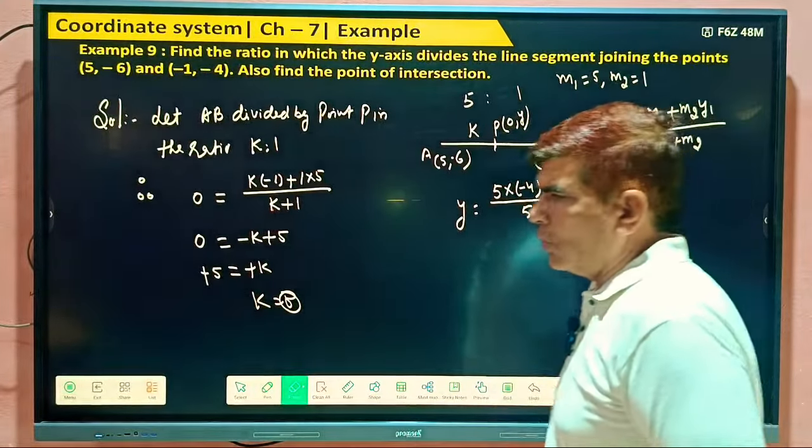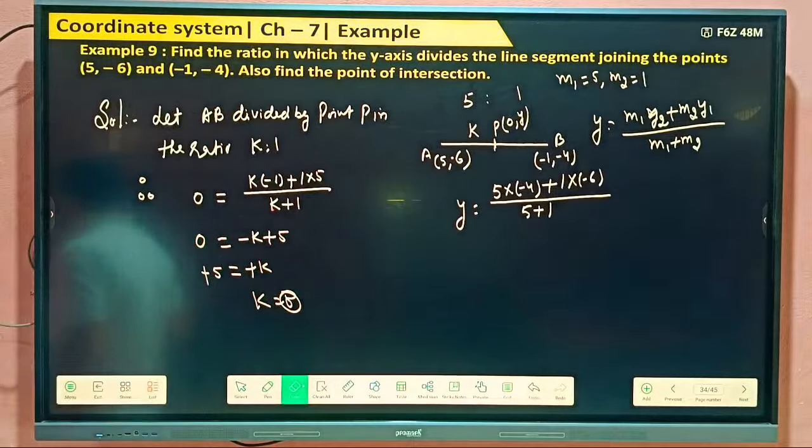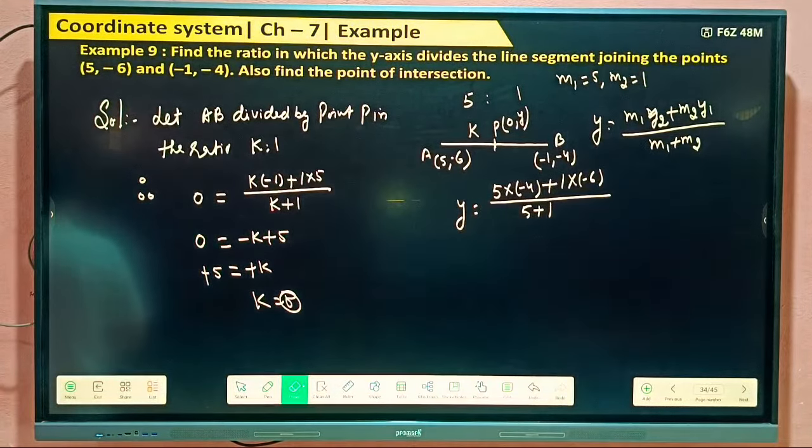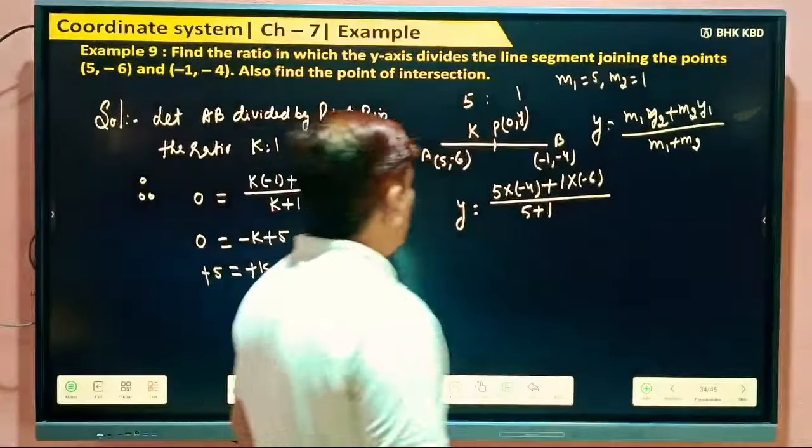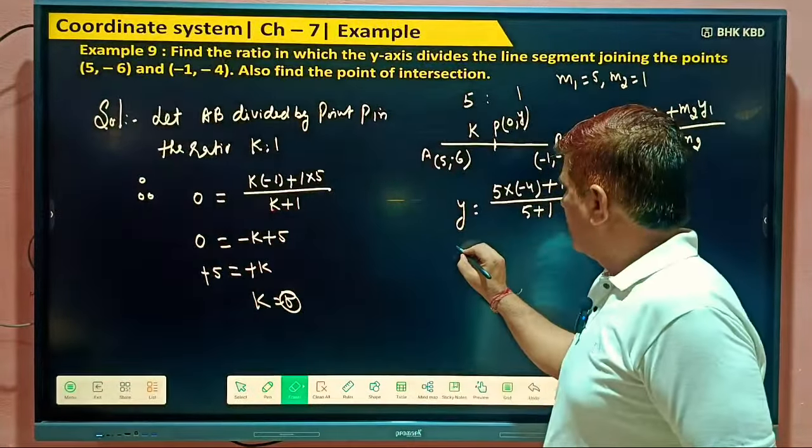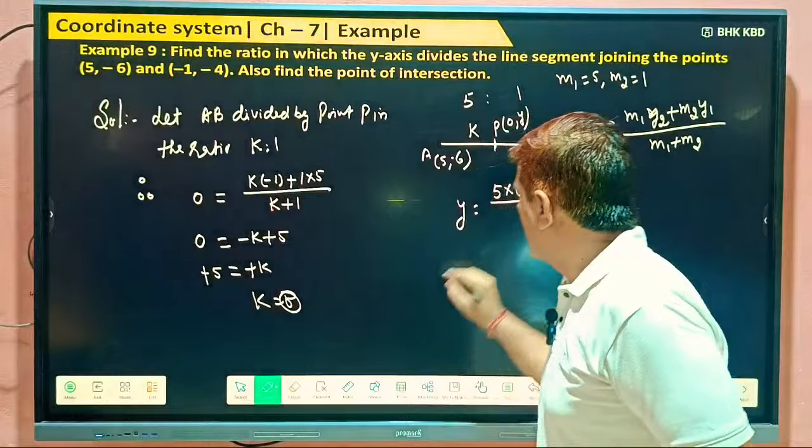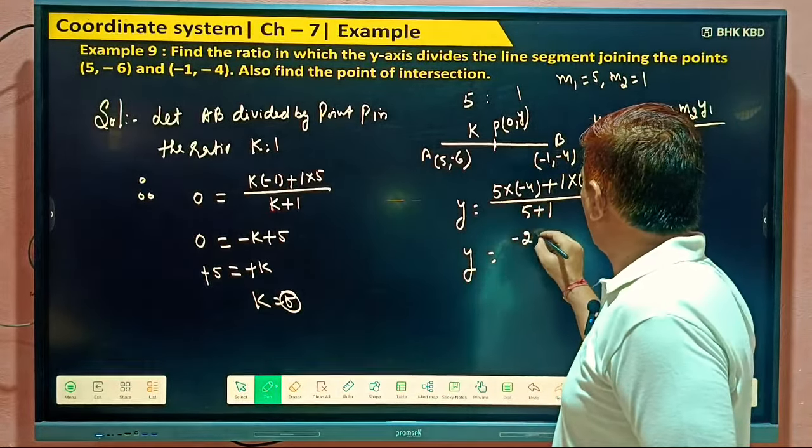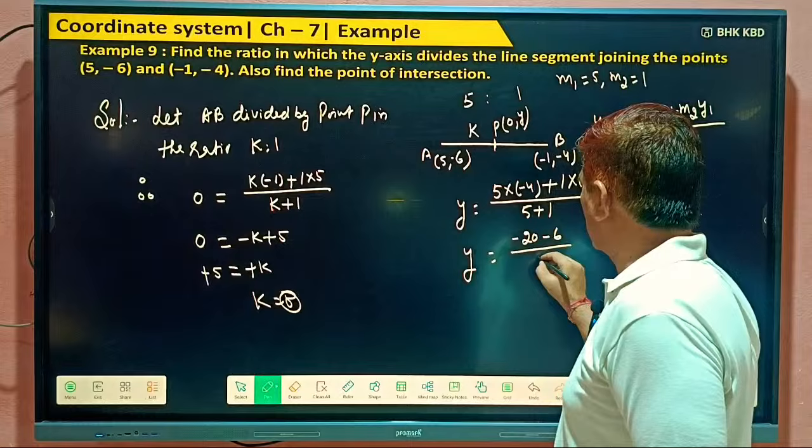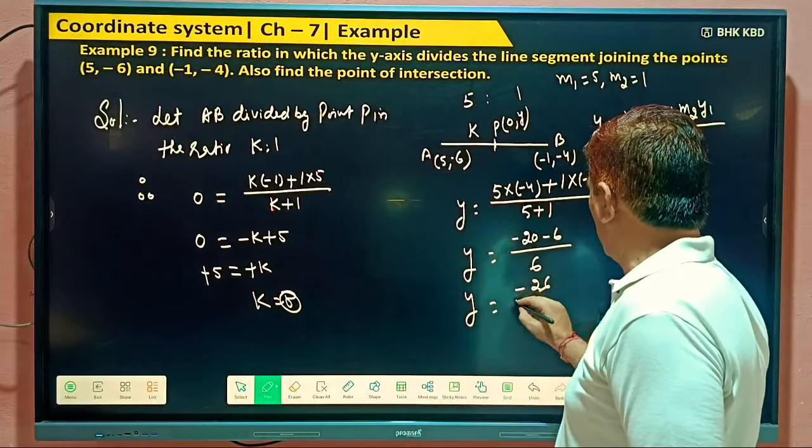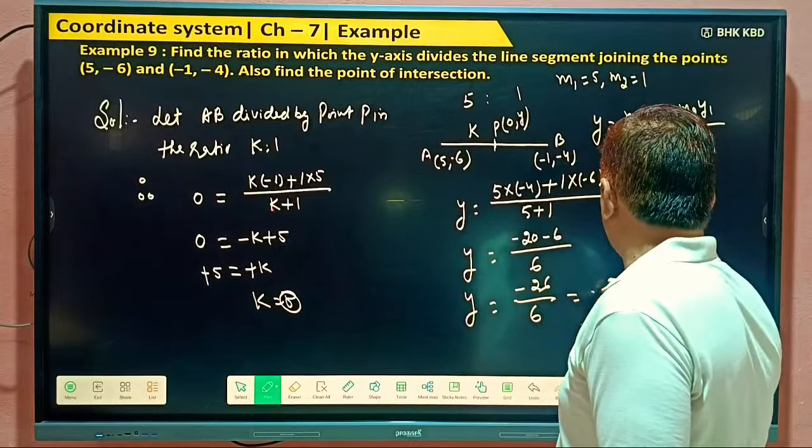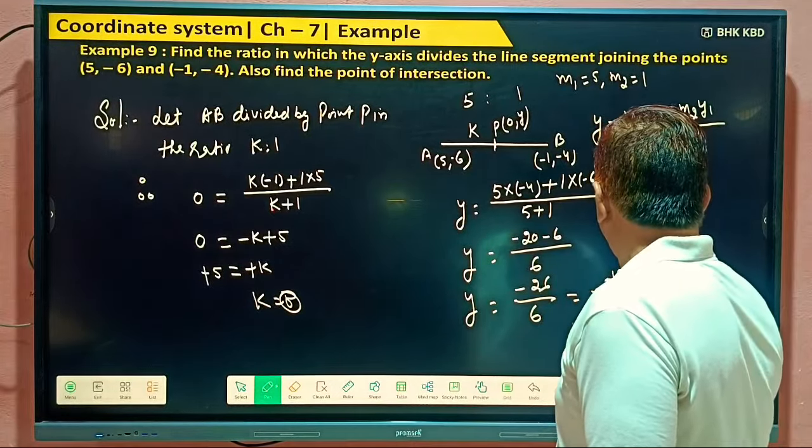So this understood or not? So example number 9, easily able to solve or not able to solve? Yes or no? So what's it become? Y equal to minus 20 minus 6, 6 by 6. So Y equal to minus 26 by 6. If you can convert this, minus 13 by 2.